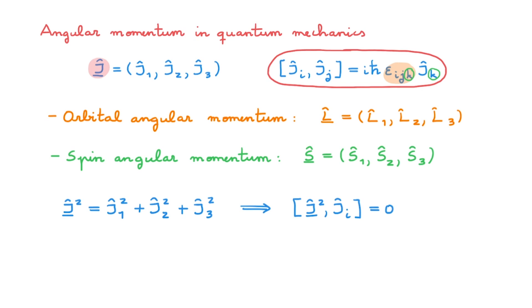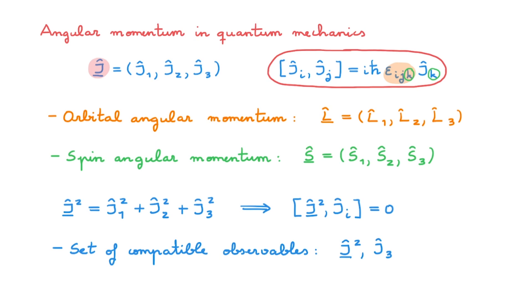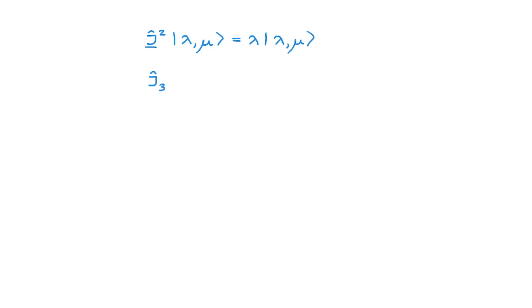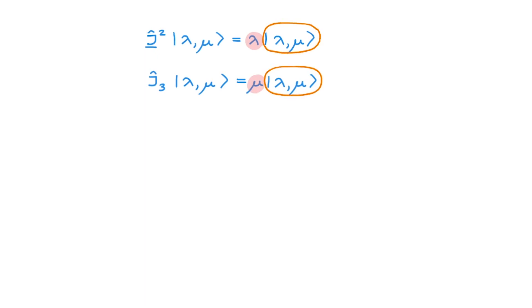This means that in the quantum theory of angular momentum, we can build a set of compatible observables by considering j squared and one of the components ji, and we conventionally use j3. We now build the theory of angular momentum with these two compatible observables j squared and j3. The key equations are the eigenvalue equations: for j squared the eigenvalue is lambda, and for j3 the eigenvalue is mu. These eigenstates are a common set of eigenstates for the two commuting observables, labeled with the eigenvalues lambda and mu.